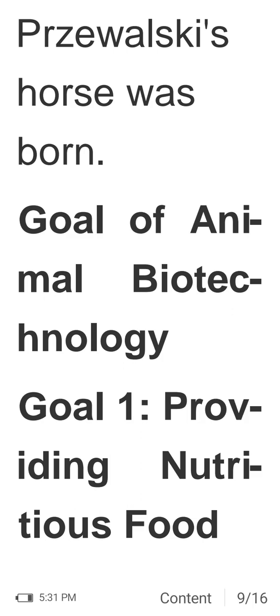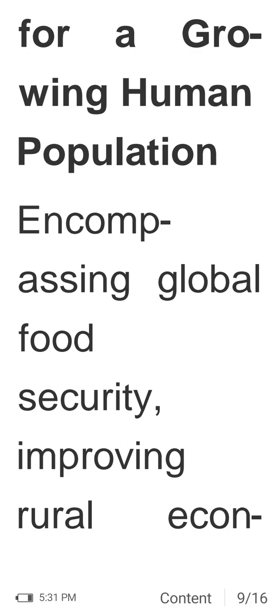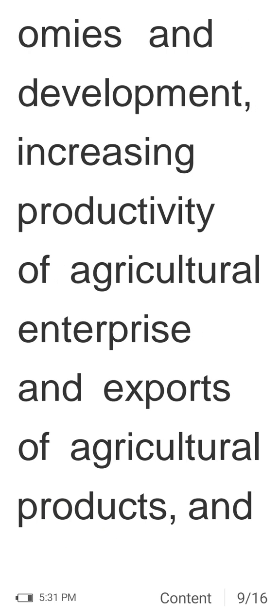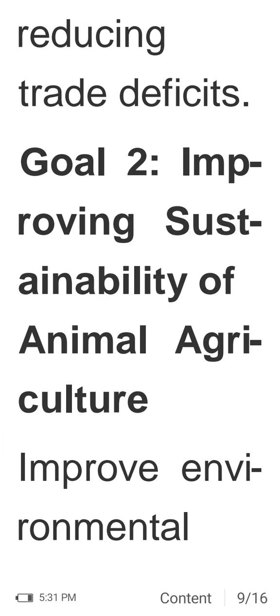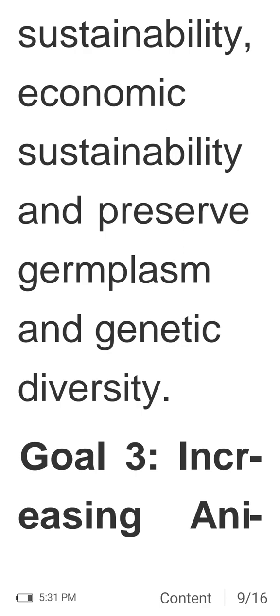The next goals of animal biotechnology include: providing nutritious food for a growing human population, improving global food security, improving rural economies and development, increasing productivity of agricultural enterprises and exports, and reducing trade deficits. Additional goals include improving the sustainability of animal agriculture — environmental sustainability, economic sustainability — and preserving germ plasm and genetic diversity.